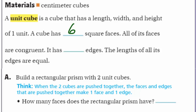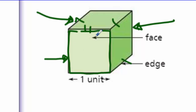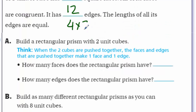A unit cube has six faces: one, two, three, four, five, six — just like a die. All of its faces are congruent, meaning each face is the same. Now how many edges does it have? You can look at your unit cube and count: one, two, three, four on one side, then another four, and another four. That gives us four times three, which is 12 edges. The length of all its edges are equal.